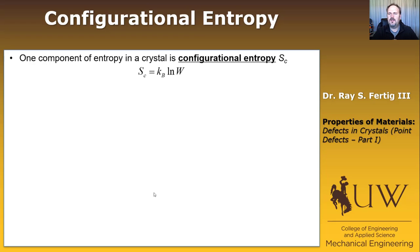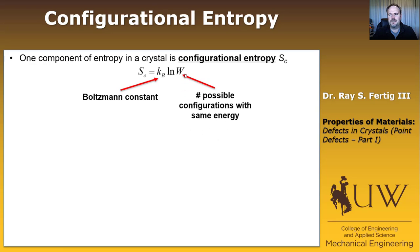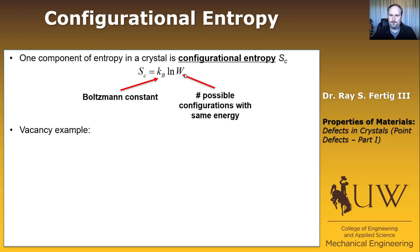The configurational entropy is related to the Boltzmann constant k_B times the natural log of W, where W is the number of states with equal energy. k_B is Boltzmann's constant, and W is the number of possible configurations with the same energy. Let's apply this to vacancies to see if that clears it up.